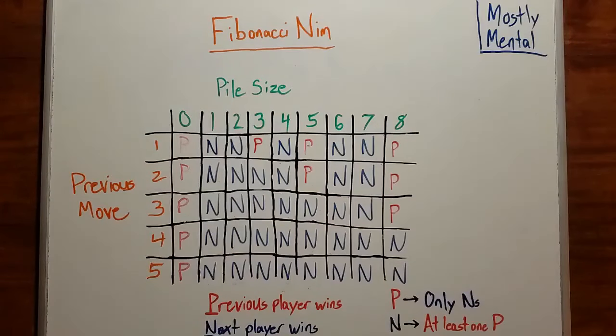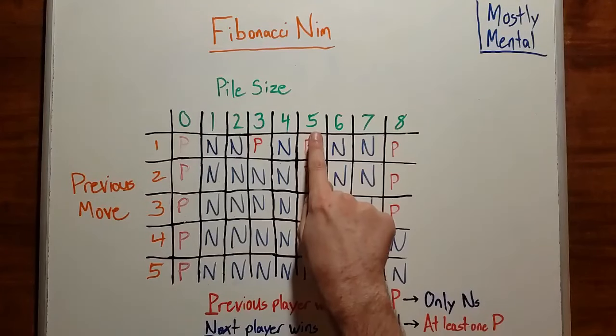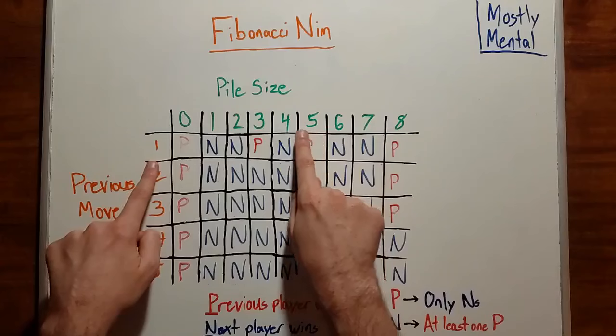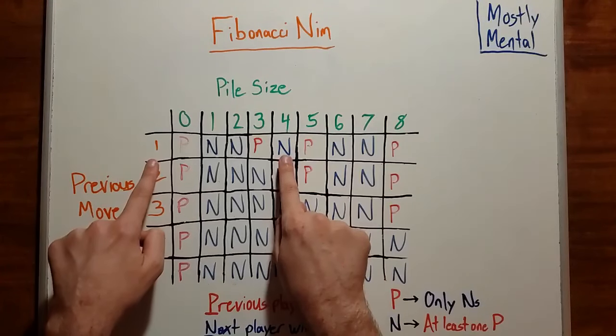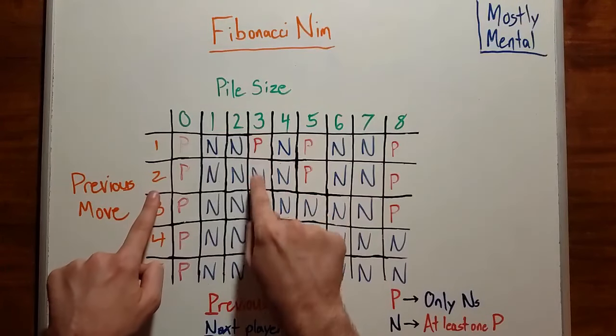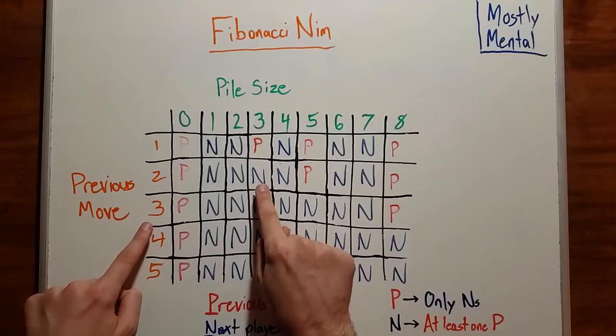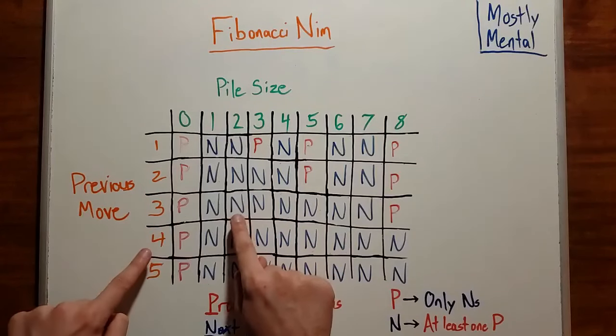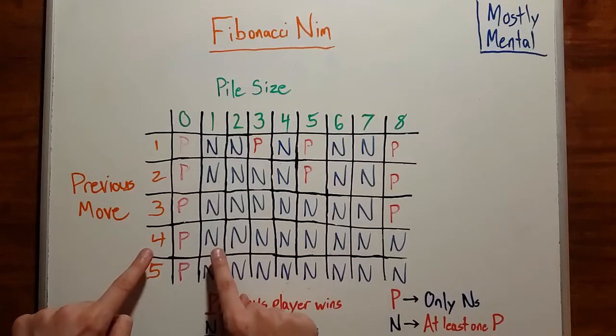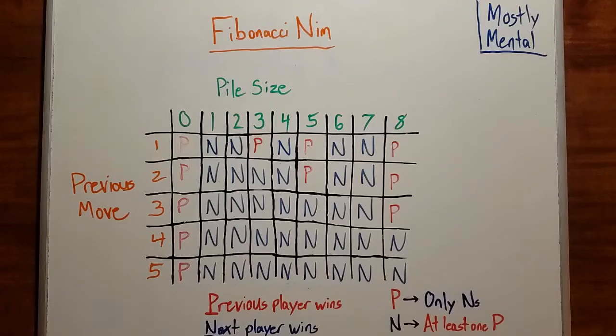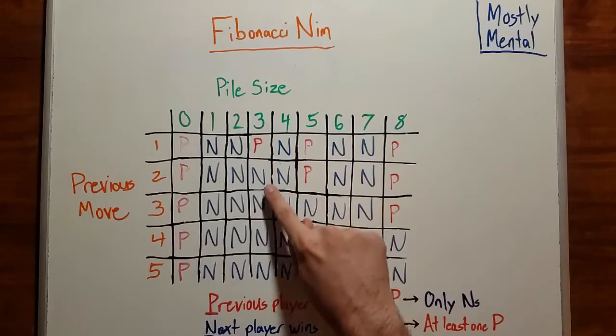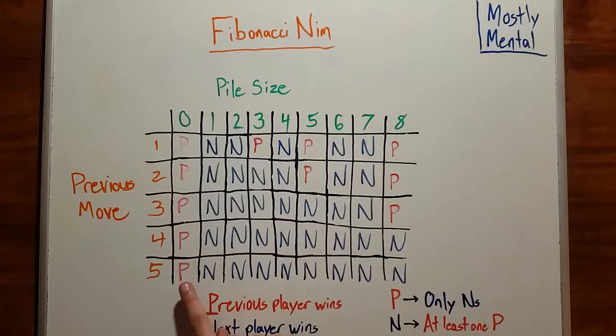What about the first move? Well, if we have a pile of, say, size 5, we can take 1 duck away and leave a pile of size 4, or we can take 2 and leave 3, or take 3 and leave 2, or take 4 and leave 1. In other words, we can move to any position on this diagonal, except for the one with pile size 0, since that corresponds to taking all the ducks on the first move, and we said that's not allowed.